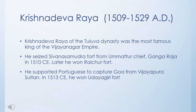Krishnadevaraya of the Tuluva dynasty was the most famous king of the Vijayanagara Empire. He seized the Shiva Samudra fort from Ummatur chief Ganga Raja in 1510 CE. Later he won the Raichur fort, supported the Portuguese in capturing Goa from the Vijayapura Sultan, and in 1513 CE he won the Udayagiri fort.